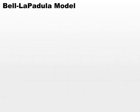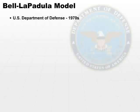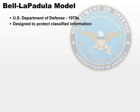Let's look at the first of our specific models, the Bell-LaPadula model. This model was presented by the Department of Defense in the 1970s. It was designed specifically to protect classified information, so it's very much a Department of Defense or government type of model. It addresses data confidentiality only — it does not address integrity or availability.